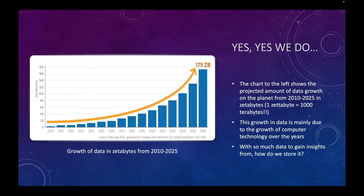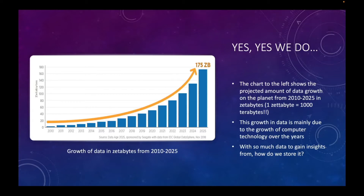So do we have enough data? Yes, we do. This is a projected chart from a professional statistics database measuring projected growth from 2010 to 2025 — a growth of 175 zettabytes, one zettabyte being 1,000 terabytes, by 2025. The graph shows an exponential rate. The amount of data in the world is just growing exponentially, and this is only from 2010. With the advent of the internet around the 1970s and 80s, the amount of data we have is astronomical.